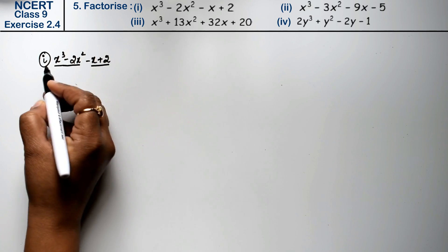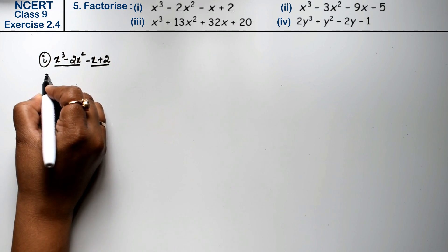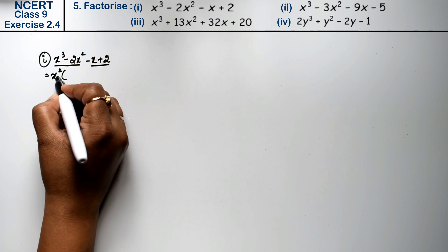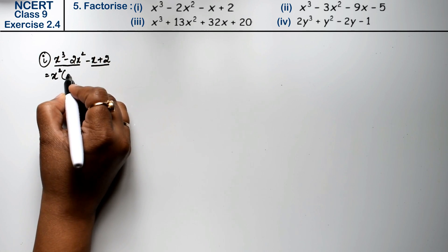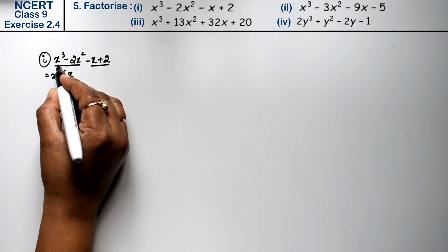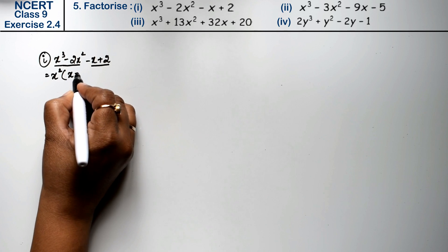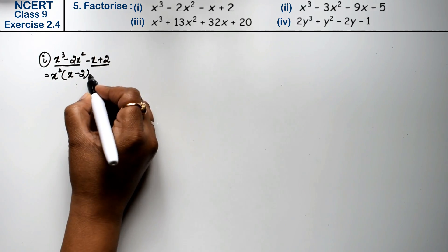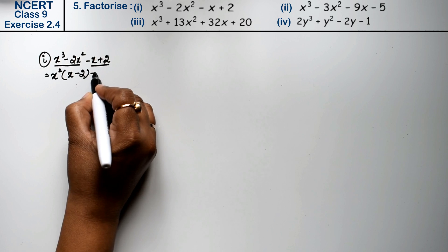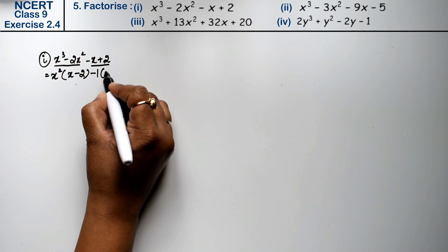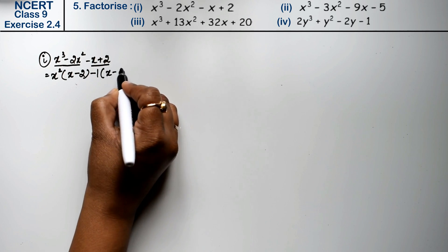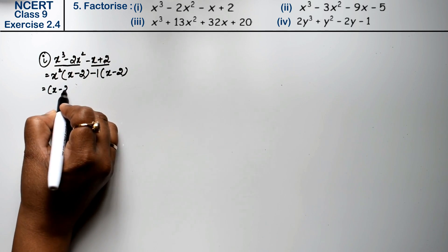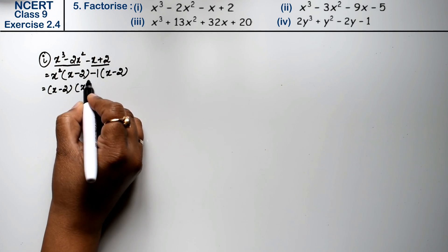What is common between these two and what is common between these two? If you look at the first two terms, x squared is common. Taking x squared common, the remaining factor has minus 2. For the last two terms, if we take minus 1 common, we get x minus 2. So x minus 2 is common in both groups.